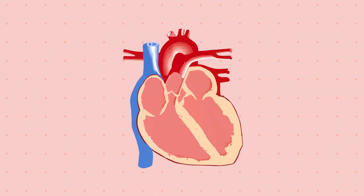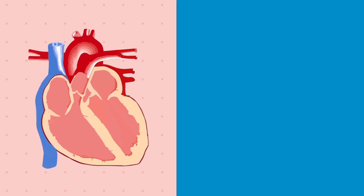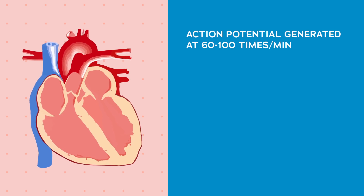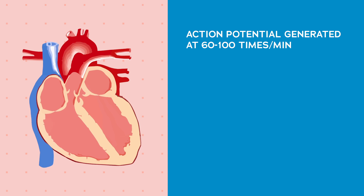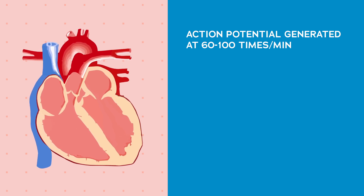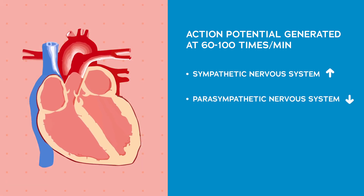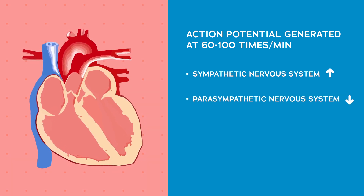The normal resting heart rate is 60 to 100 beats per minute because the SA node cells depolarize and send action potentials at a frequency of 60 to 100 times per minute, causing the working myocytes to contract. This sets the pace of the heart, known as sinus rhythm. This rhythm is modified by the nervous system — the sympathetic system speeds it up and the parasympathetic slows it down.